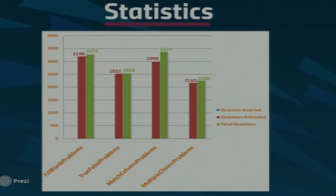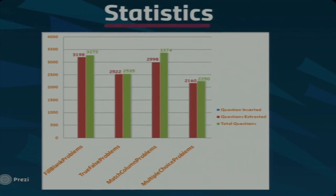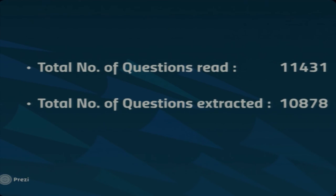Looking at the statistics: green bars represent total questions in the files and red bars represent questions extracted. The red bars are lower because invalid, illegal, or duplicate questions are rejected. In total, we read 11,431 questions and extracted 10,878. Because of this large volume, it was essential to develop software that can effectively extract and insert questions into the database.